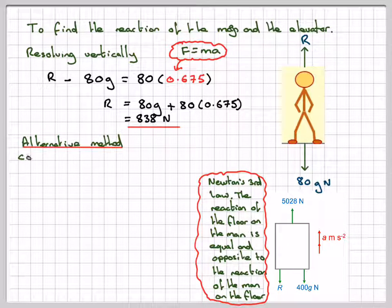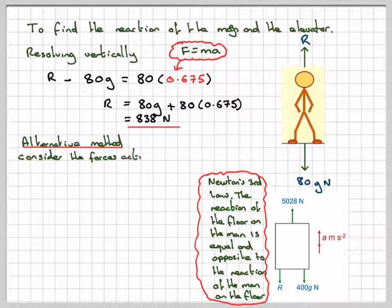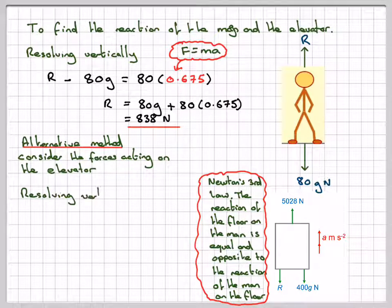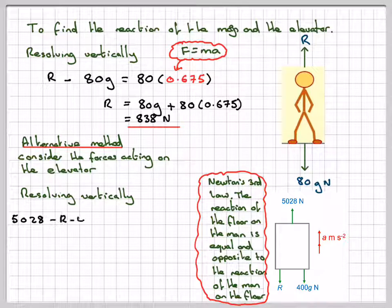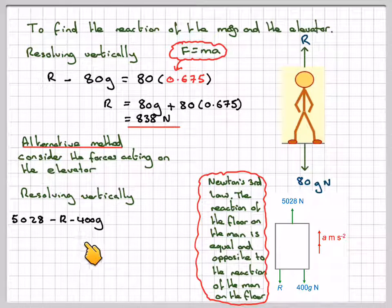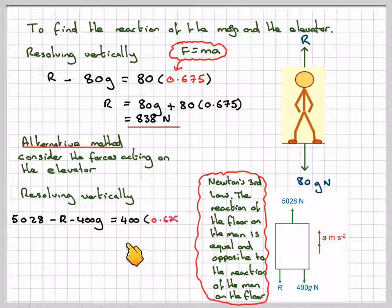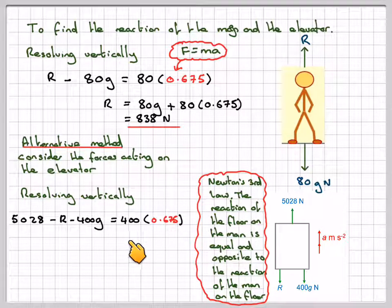Alternative method: having calculated the acceleration, consider the forces acting on the elevator. Resolving vertically, we have 5028 acting upwards, minus the reaction of the man, minus the weight of the lift which is 400 times G. This equals the mass of the lift times 0.675, the acceleration.